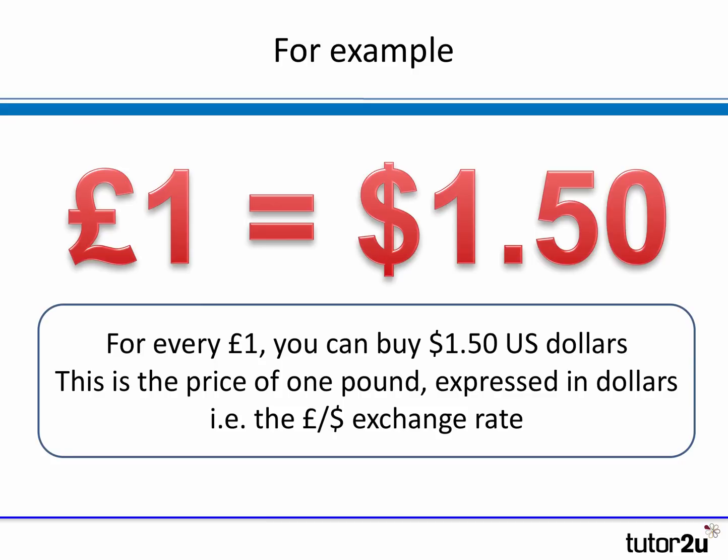Let's have a look at an example of an exchange rate. One pound buys $1.50. So for every pound you have in your pocket, if you want to buy US dollars, one pound will get you $1.50. That's the price of one pound expressed in dollars — that's the pound-dollar exchange rate.